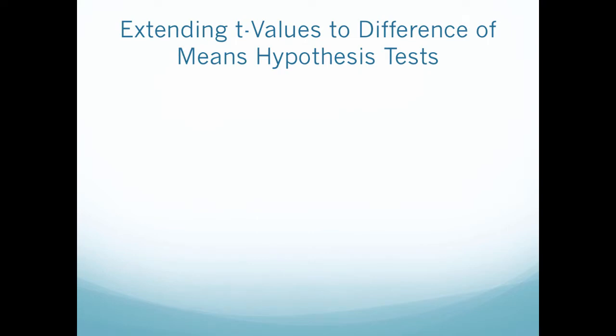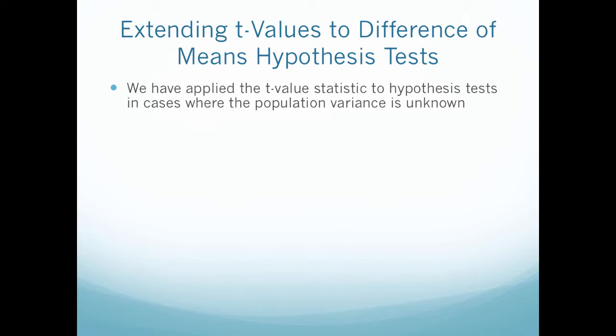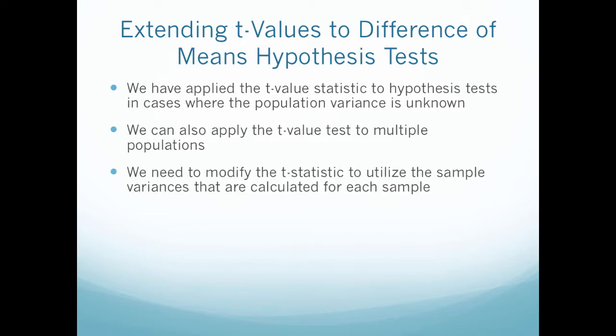We've covered all the formulas for when I know the variance of multiple populations. However, when I don't know the variance, that's when I have to start getting into some t-value formulas. When we first introduced the t-value statistic, we said that the t-statistic was used in hypothesis testing in cases where the population variance is unknown. So now we are then going to take this and apply the t-value test to multiple populations. We need to modify the t-statistic to utilize the sample variances that are calculated for each sample. And these sample variances are combined as a weighted sum, which is also called a pooled estimator.